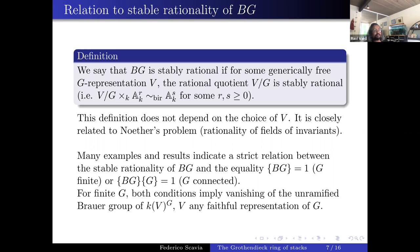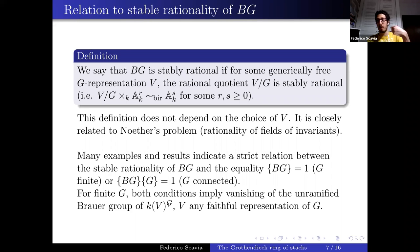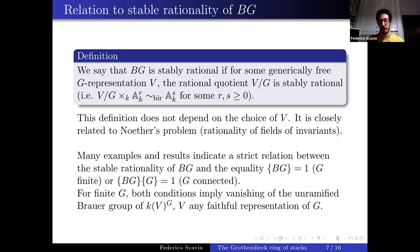The unramified Brauer group: geometrically, one takes V/G, takes a smooth projective variety birationally equivalent to it, and takes its Brauer group. Galois-theoretically, it's the Brauer group of the field k(V)^G with residue maps, taking classes killed by all residues. The residue maps go to H1 (one degree lower), so the unramified Brauer group lives in degree 2, i.e., unramified H2.